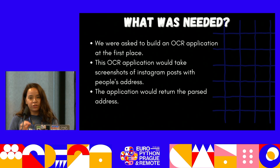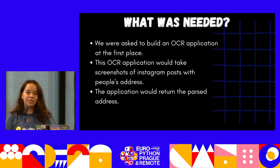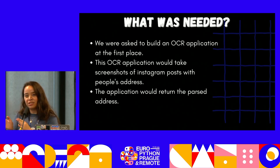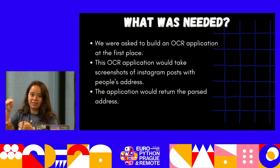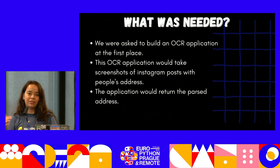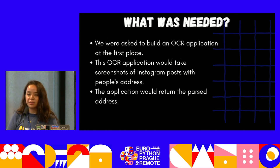We were first asked to build an OCR application. OCR is optical character recognition — you have typed or handwritten text in an image and you extract and parse the text inside it. So your input is a screenshot of writing, and your output is the parsed address — broken into street, apartment number, and more.